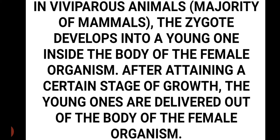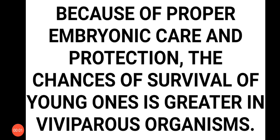In viviparous animals, including the majority of mammals, the zygote develops into a young one inside the body of the female organism. After attaining a certain stage of growth, the young ones are delivered out of the female's body. Because of proper embryonic care and protection, the chances of survival of young ones are greater in viviparous organisms compared to oviparous organisms.